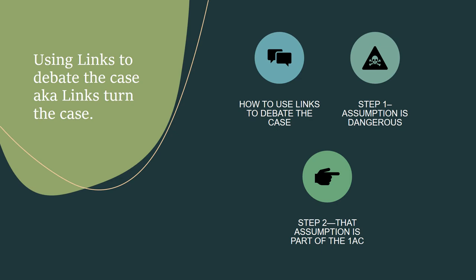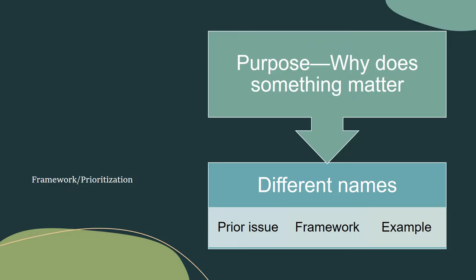I don't need to discuss impacts, because they're no different than on a disad — something bad happens. But I do want to talk about framework or a reason to prioritize. If the link arguments are true, why do they matter? In the world of uniqueness, they're just interesting facts. Framework explains why the links matter. It brings into debate a different set of considerations for how we should judge the debate. These all have different names but function the same.